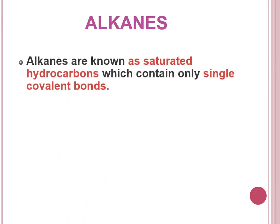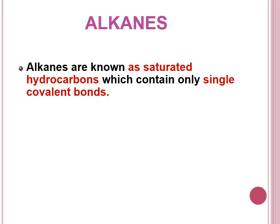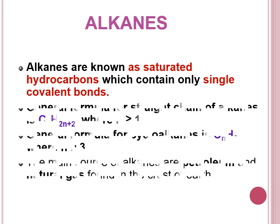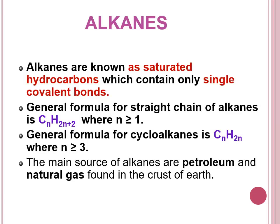Alkanes contain only single covalent bonds, so we refer to alkanes as saturated hydrocarbons. The general formula for the straight chain alkane is CnH2n+2, and for cycloalkanes, since it is cyclic, it is CnH2n. One of the main natural sources of alkanes is petroleum and natural gas, found in the crust of the earth. They are formed by high temperature and pressure under anaerobic conditions from plants and organisms buried underground a long time ago, which is why petroleum and natural gas are known as fossil fuels.